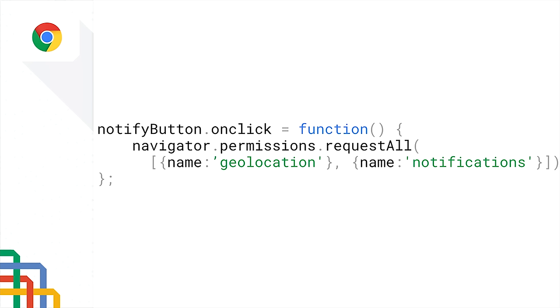This is what it looks like — it's pretty simple. You just add the parameters for the permissions you want to request and use request all.